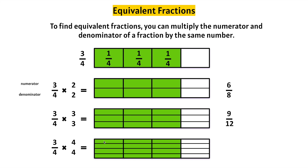Let's count how many are shaded in: one, two, three, four, five, six, seven, eight, nine, ten, eleven, twelve. Twelve-sixteenths is equivalent to three-fourths — it has the same value as three-fourths. And we know that three times four is twelve and four times four is sixteen. So three-fourths is equivalent to six-eighths, nine-twelfths, and twelve-sixteenths.